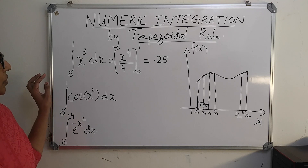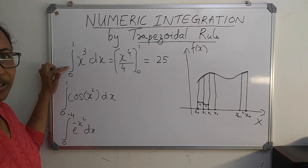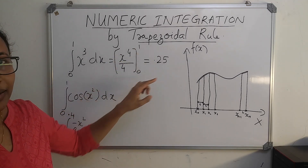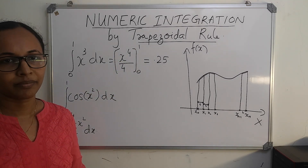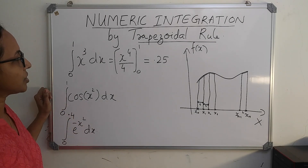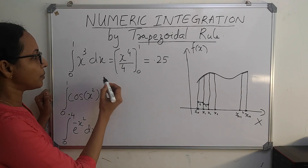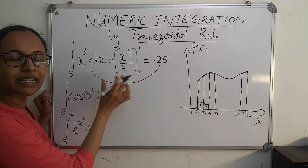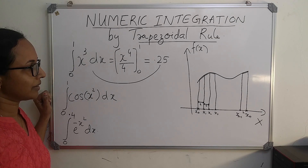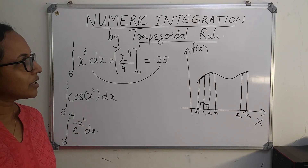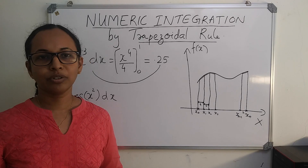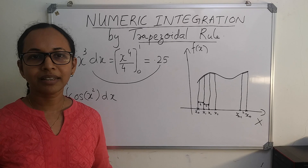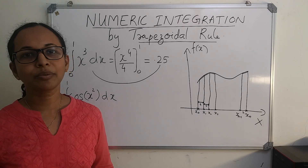You all know how to evaluate a definite integral: you integrate, apply the limits, and find the answer. But in methods of numeric integration, we can obtain this value directly without integrating the actual function. Therefore, this method is useful when the integrand is very difficult to integrate or even impossible to integrate.